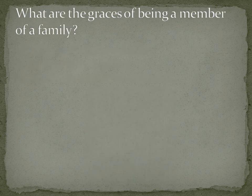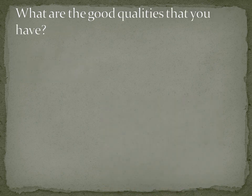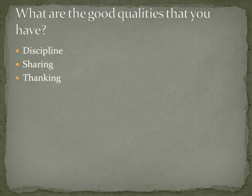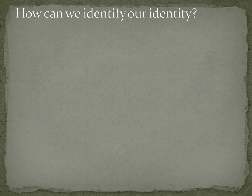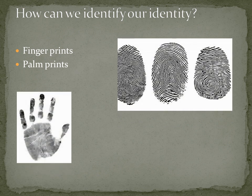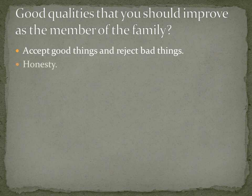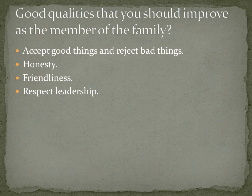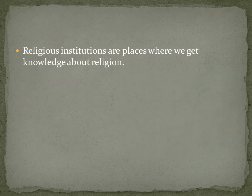What are the graces of being a member of a family? Getting protection, love, and affection, and getting education. Good qualities you should have include discipline, sharing, and thankfulness. How can we identify your identity? Through fingerprints and palm prints. Here you can see three different fingerprints and a palm print. Good qualities you should improve as a member of a family include accepting good and bad things, honesty, friendliness, expecting leadership, and tolerating others' ideas.